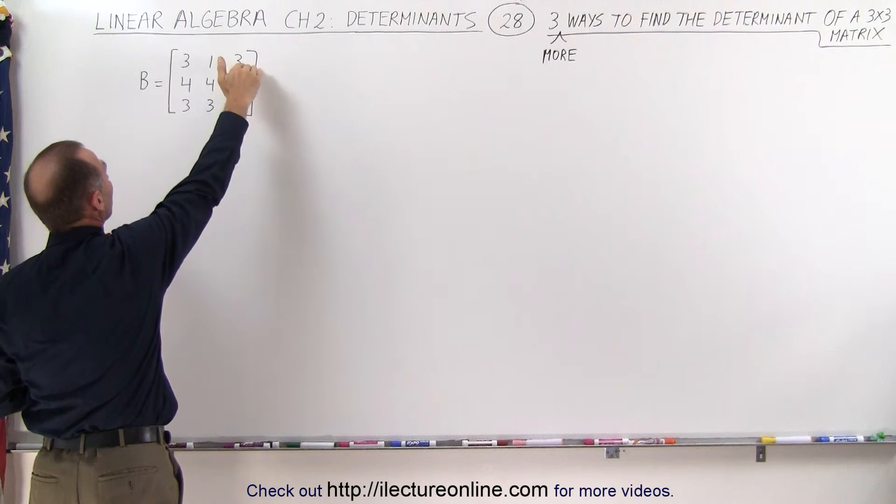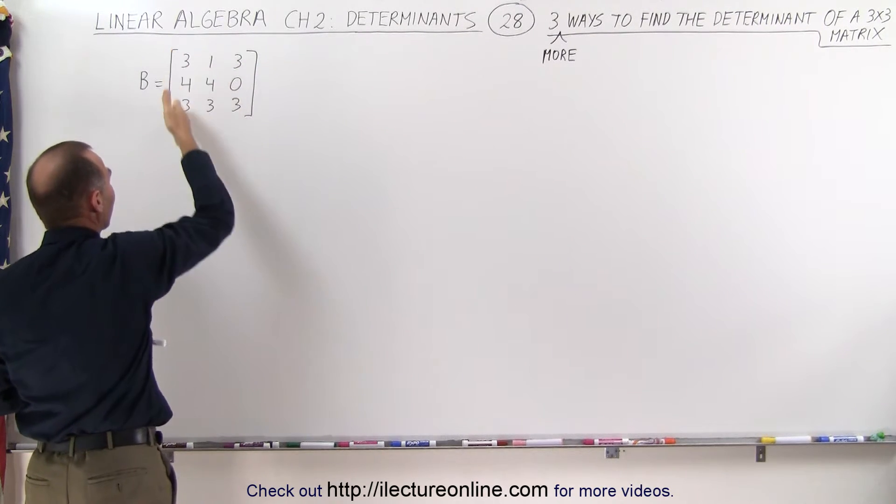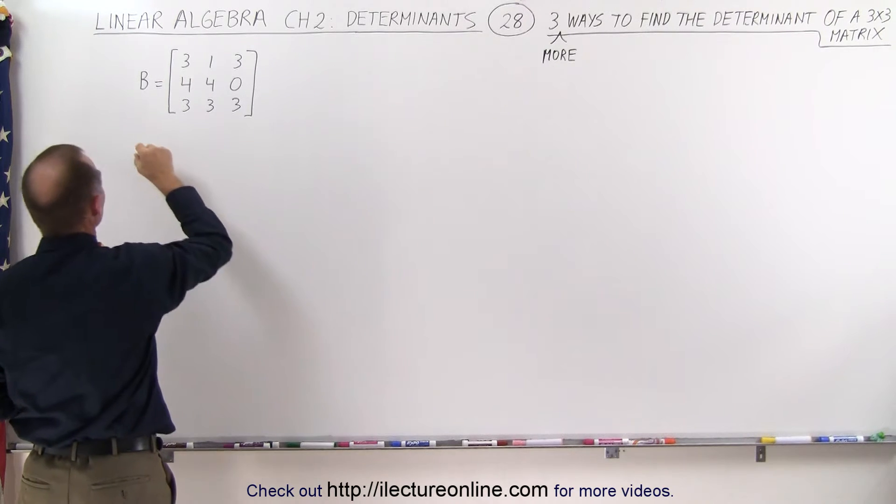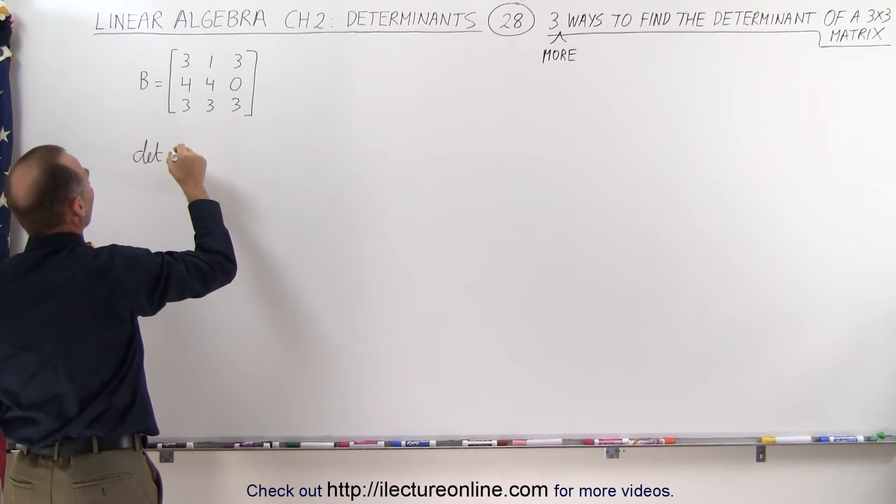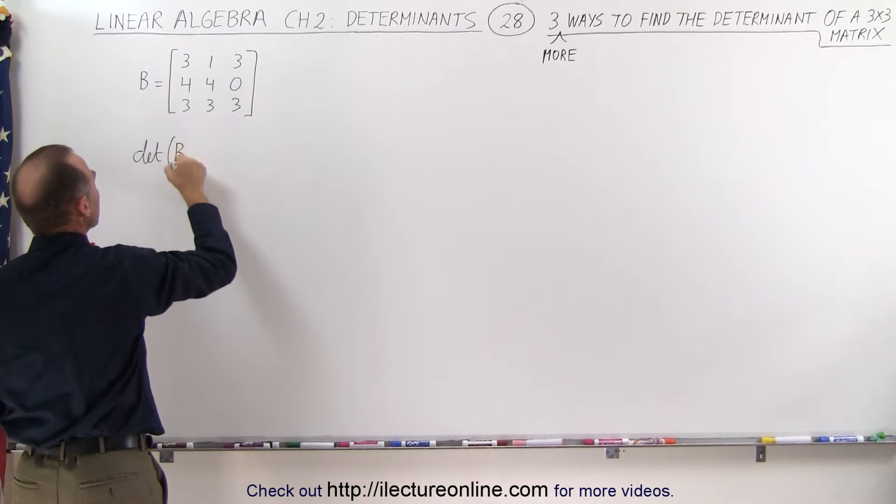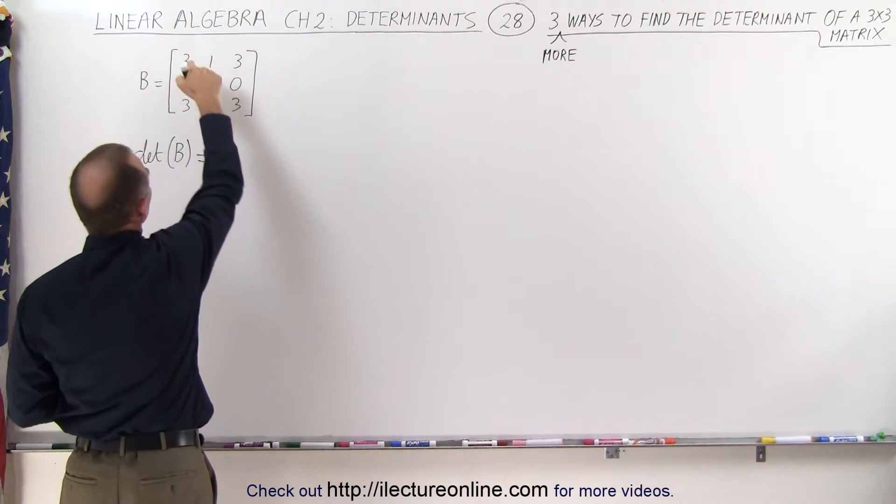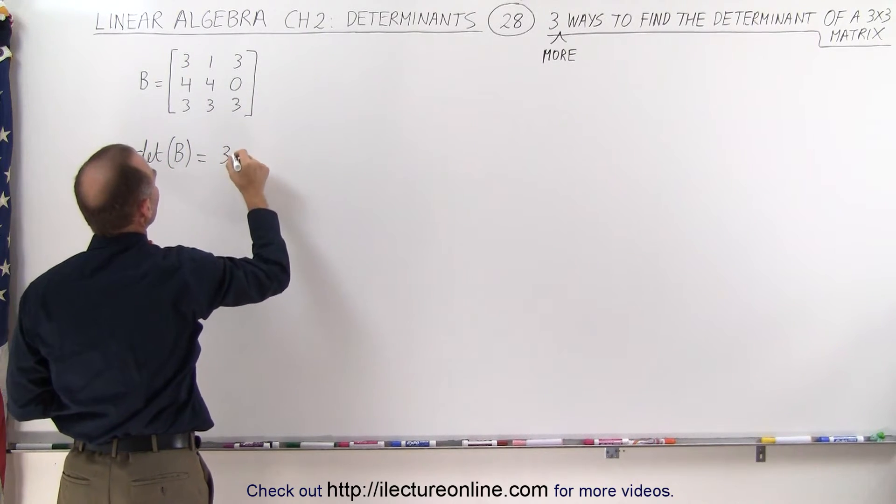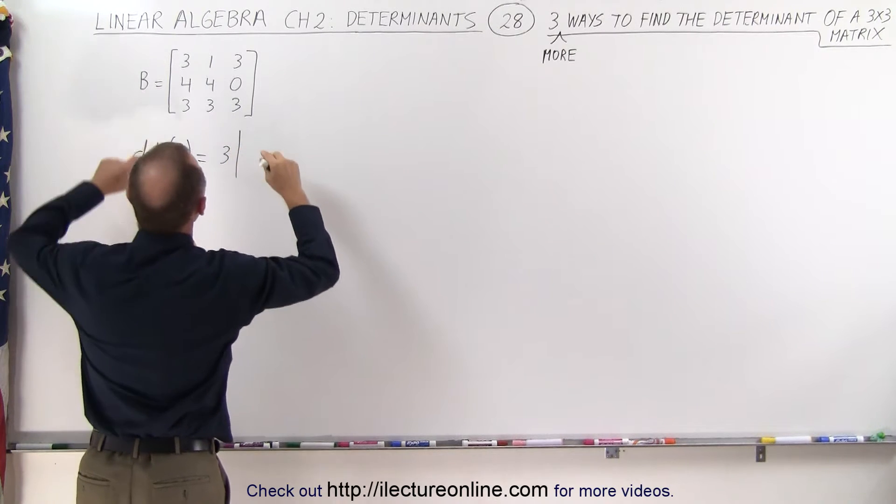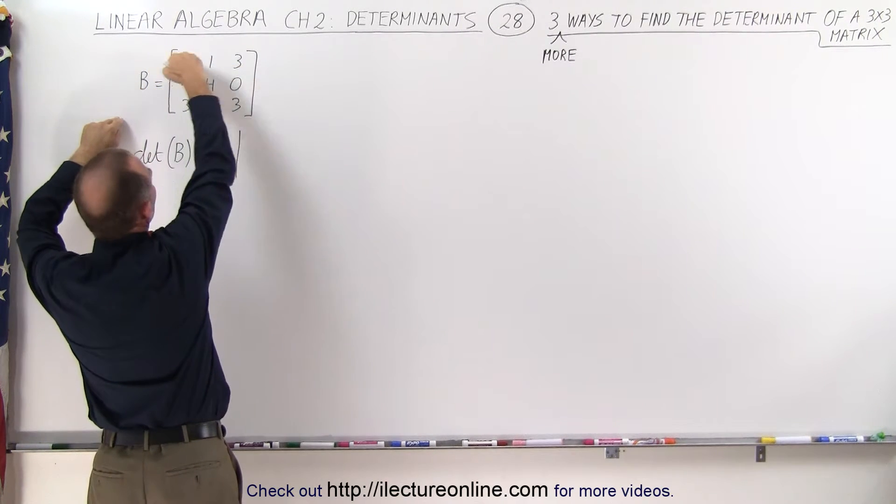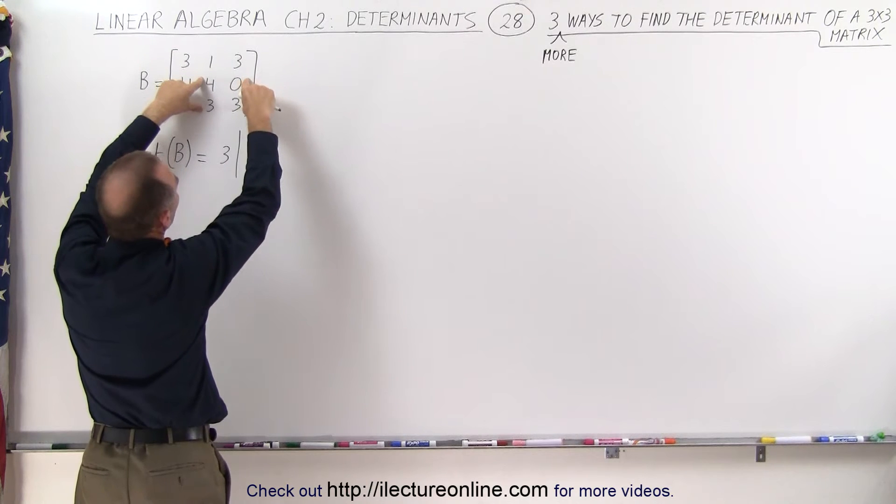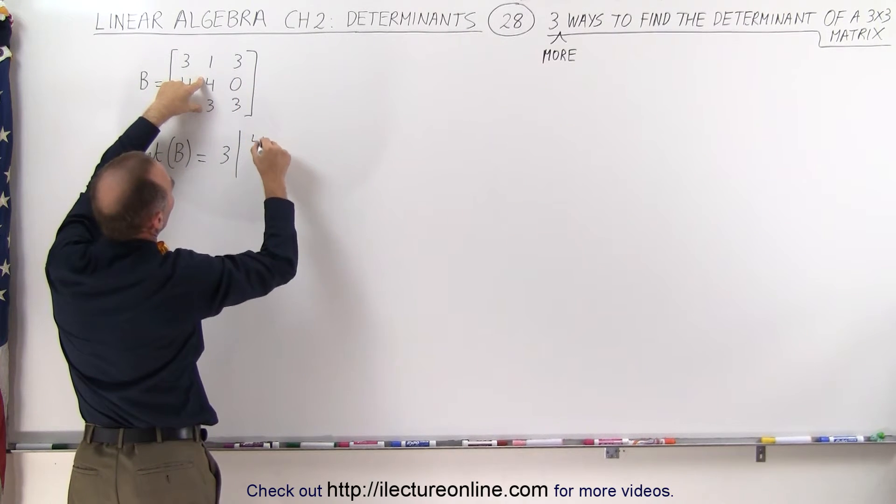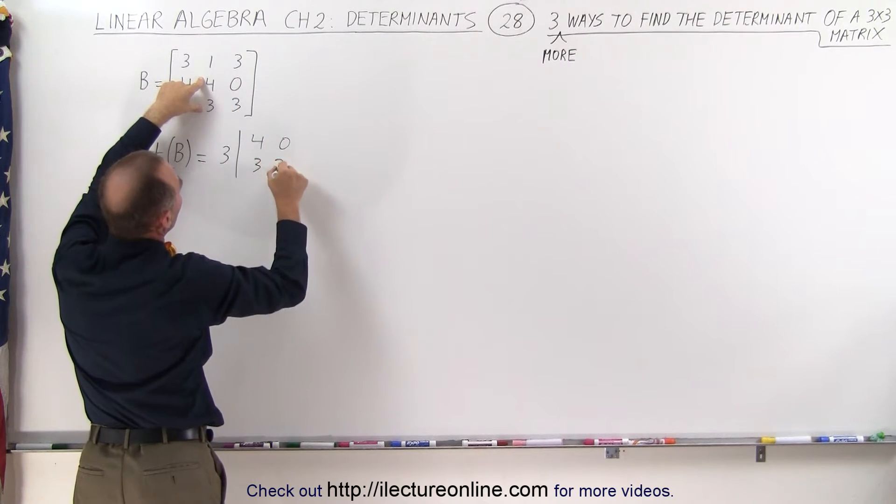So instead of taking the top row, we're going to go down the left side right here. We can say that the determinant of the matrix B is equal to, take the first element, 3, times the determinant of the remaining four elements. So we cross out this row and this column and end up with those four elements: 4, 0, 3, and 3.